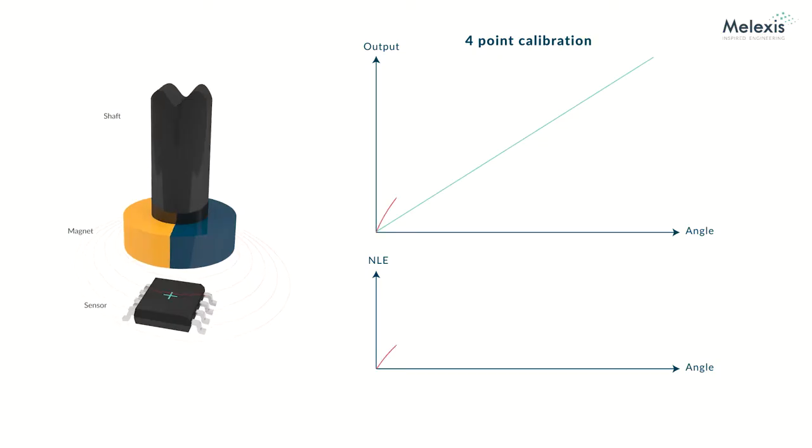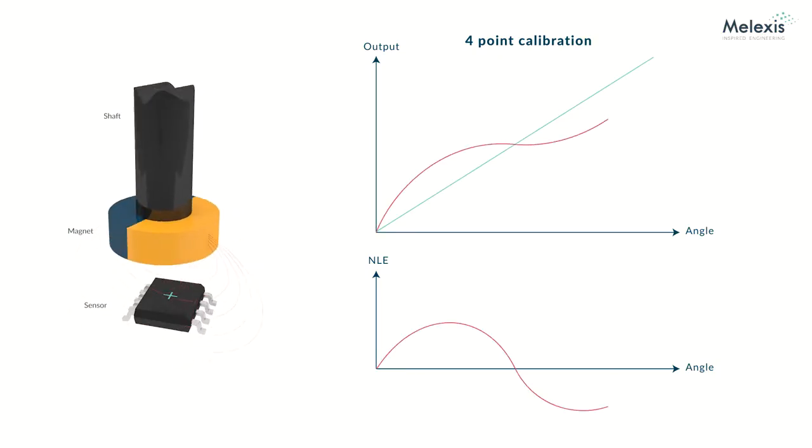We offer different methods to define this curve. The 4-point calibration method allows you to define the transfer curve by programming 4 points in arbitrary positions and 5 slopes. The ability to program the points in arbitrary positions makes it possible for you to achieve a better linearization by placing points where the non-linearity is the highest.